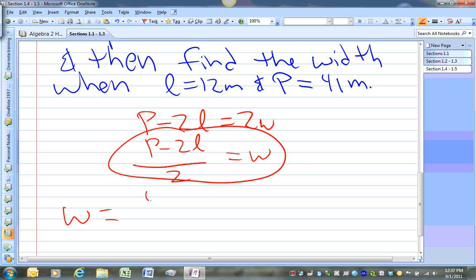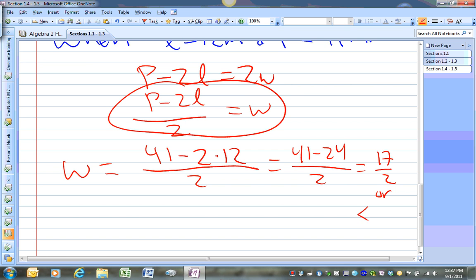So we put in 41 for P, 12 for L. Work it out. You get 41 minus 24 over 2, which equals 17 halves, or 8.5.